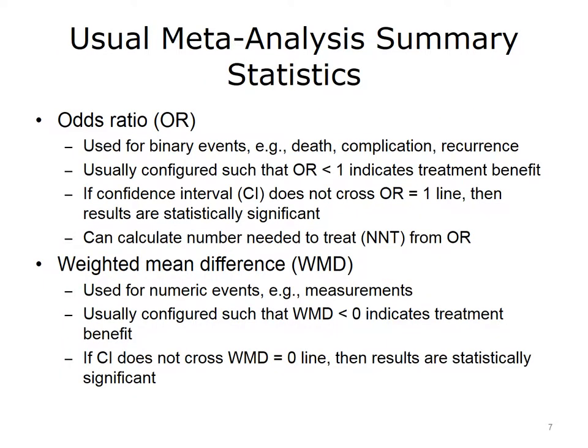The odds ratio is used for binary events. Many studies are reported in terms of how they reduce certain events that we're trying to avoid, such as death, complications of a disease, the development of a myocardial infarction, high blood pressure, kidney disease, diabetes, the recurrence of a disease, or the reemergence of cancer after initial treatment. Usually, the odds ratio statistic is configured when it's less than one, which indicates there's a benefit for treatment. This is the approach that the Cochrane Collaboration uses. When the odds ratio is less than one, there's benefit for the treatment, and when the confidence interval does not include the odds ratio equals one line — when it does not cross over that line — our results are statistically significant. We can calculate the number needed to treat from the odds ratios, translating odds ratio findings into more meaningful information from a practical standpoint.